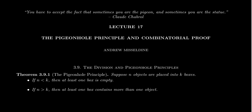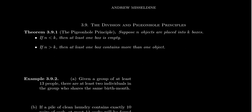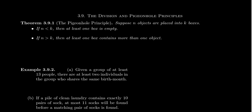I'm going to frame it as theorem 391, using combinatorial terms. Suppose that we have N objects placed into K boxes. The first principle is: if you have fewer objects than boxes, then at least one of the boxes has to be empty. If you only have four pigeons and 12 holes, then at least one hole is going to be empty.